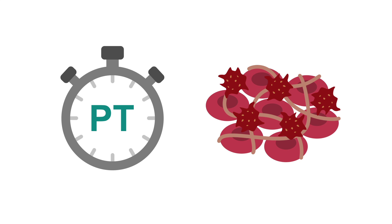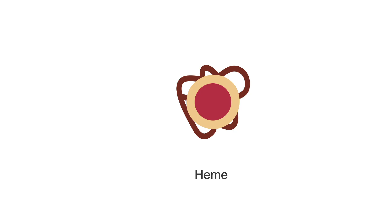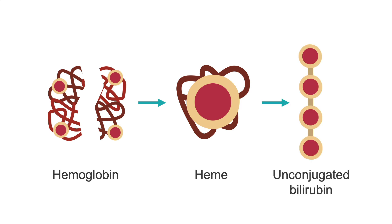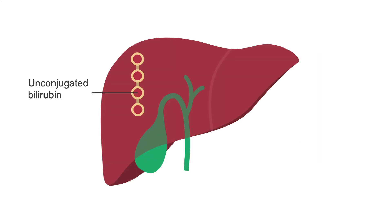Bilirubin is a waste product produced from the breakdown of red blood cells. Heme, derived from the breakdown of hemoglobin, ultimately becomes unconjugated bilirubin, which is a non-water-soluble molecule that is bound to serum albumin in the blood.